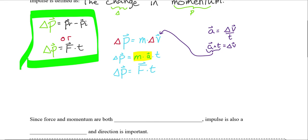One last note here is that since both force and momentum are vectors, impulse is also a vector and it's going to be very important for us to pay attention to the directions that are occurring in any problem.